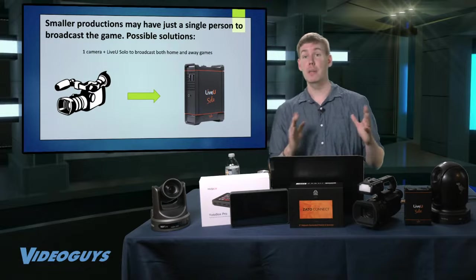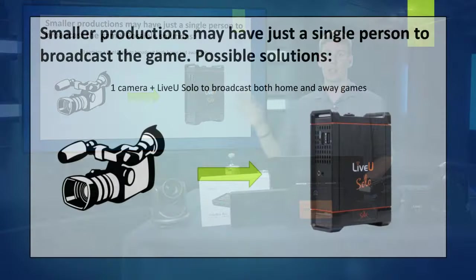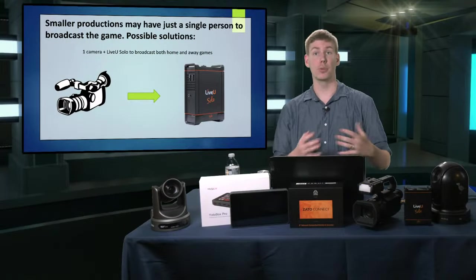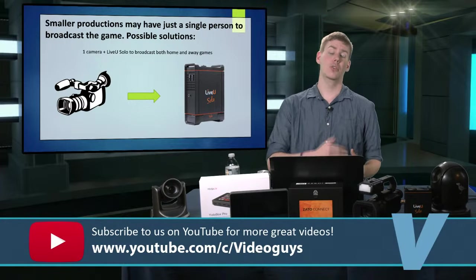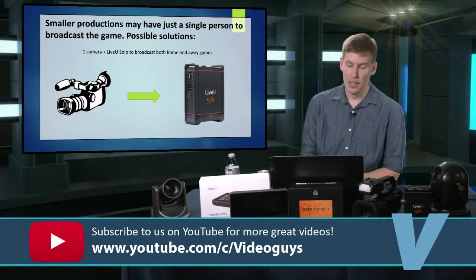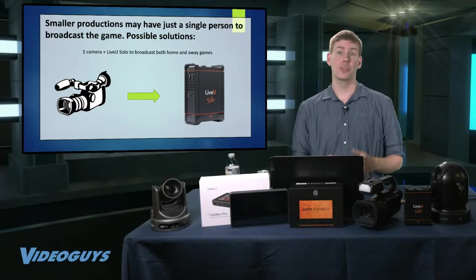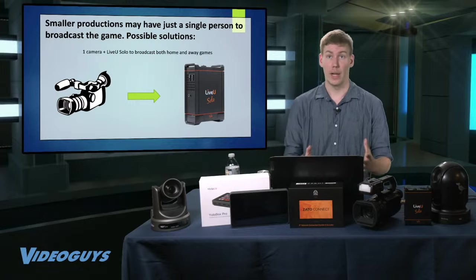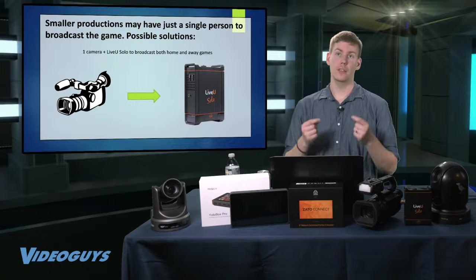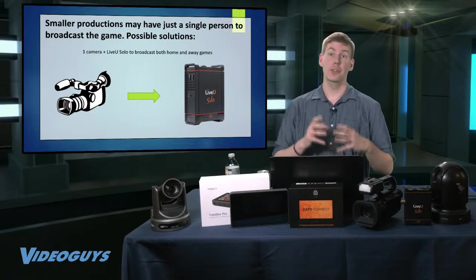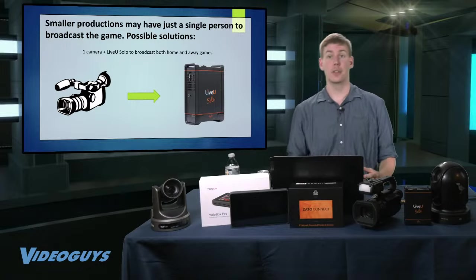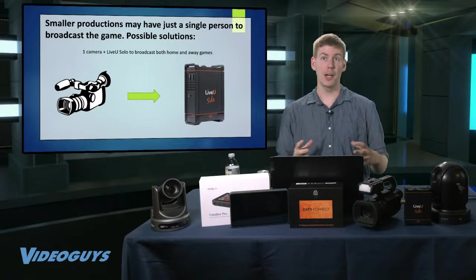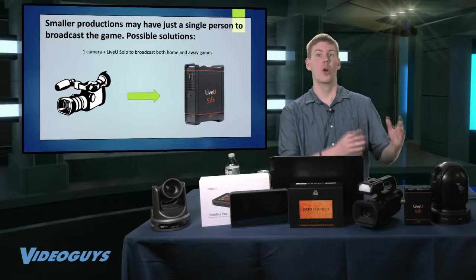The very most basic way to do that is camera and encoder. An encoder is just something that sends a video signal to a CDN, whether it's Facebook, YouTube, Twitch, or even a custom RTMP of your choice. So if you wanted to send the video feed directly to your school's website, you can use a custom RTMP. You can use something like the LiveView Solo. It takes in either an SDI or HDMI video feed and sends it to a CDN wirelessly. It comes with two USB cellular modems that you can plug in to bring your internet anywhere you are.